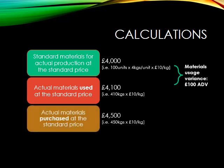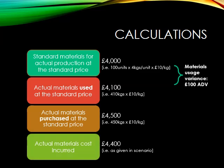Next, I'm going to calculate the actual materials purchased at the standard price. I bought four hundred and fifty kilograms, each should have cost ten pounds per kilogram, so overall four thousand five hundred pounds. Comparing that with the actual materials cost of four thousand four hundred pounds, the difference between those two figures is my materials price variance — that's one hundred pounds favourable, because the actual materials cost was less than the actual materials purchased at the standard price.